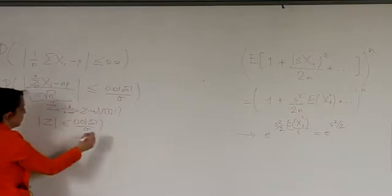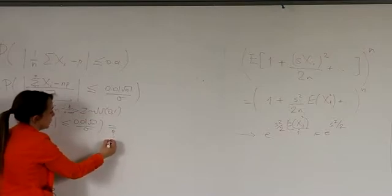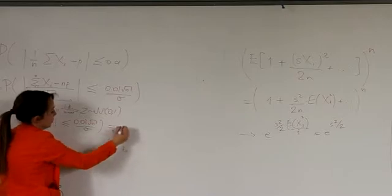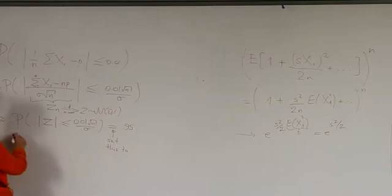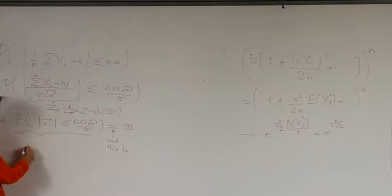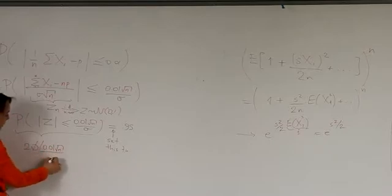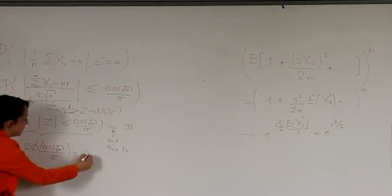Now, we want this to be, set this to 0.95. What is the value of n such that this probability is equal to 0.95? First of all, what is this? Let's write it in terms of the phi function. This is 2 times phi of 0.01 square root of n divided by sigma. So, set this to 0.95.